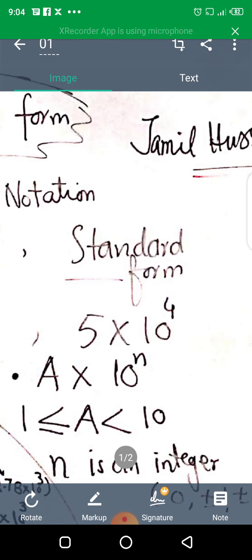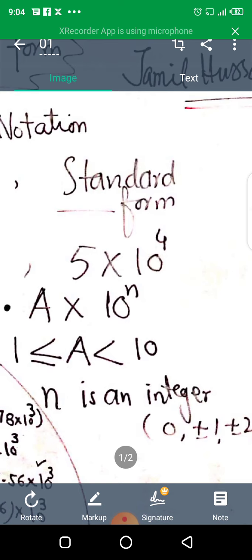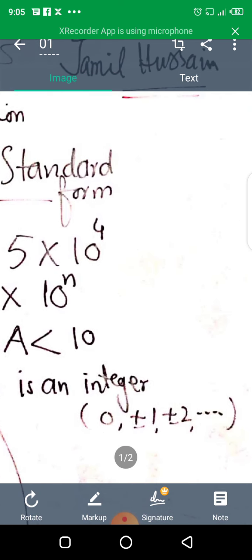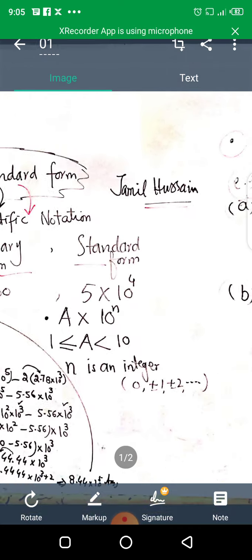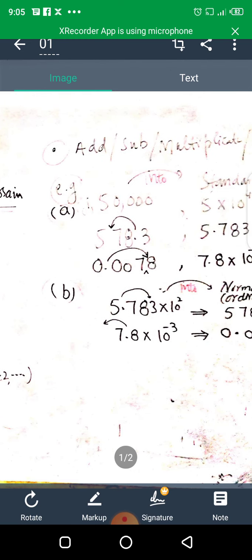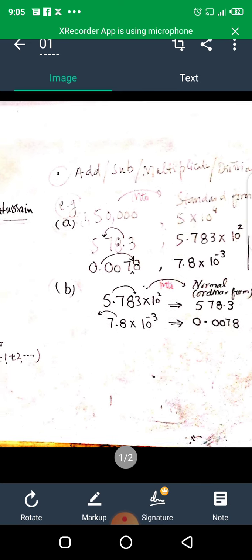The value cannot be less than one or more than ten. Next one is n is an integer, so integer may be zero, plus minus one, plus minus two, and so on. Next, suppose in such cases we have to discuss the addition, subtraction, multiplication, and division of standard form.